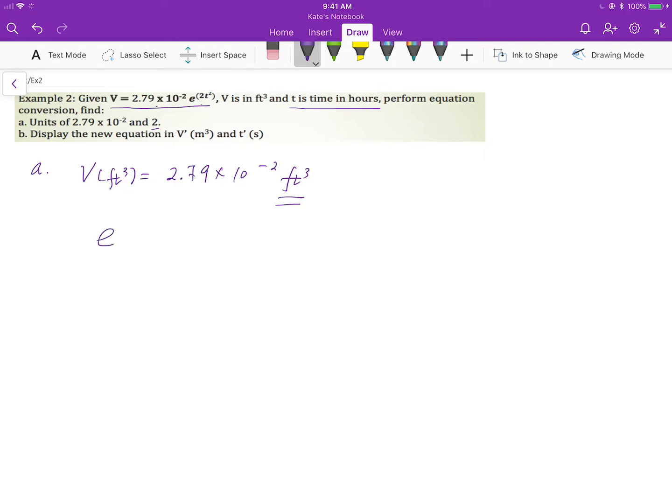Then we can look at the part with natural base. Natural base has the power 2t squared. And given t is hours, we know that the exponent is dimensionless group as well. But t has unit which is in terms of hour. Therefore, we have to make sure that the unit cancels out so that you can have a dimensionless group in the power.